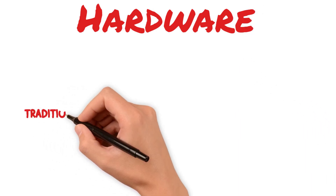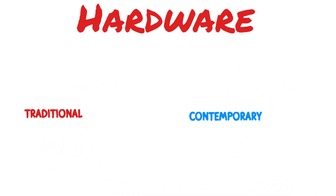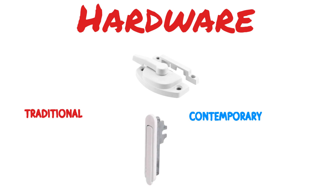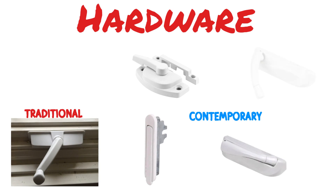Hardware on a window can include locking systems, hinges, and handles. There are various grades of hardware, but the most effective hardware is the kind that you can service if anything goes wrong. Some handles can fold in to make room for California shutters, and others would require an aftermarket butterfly style.